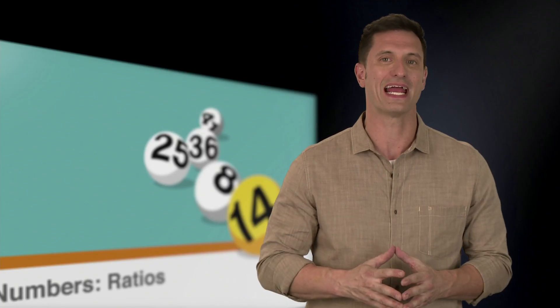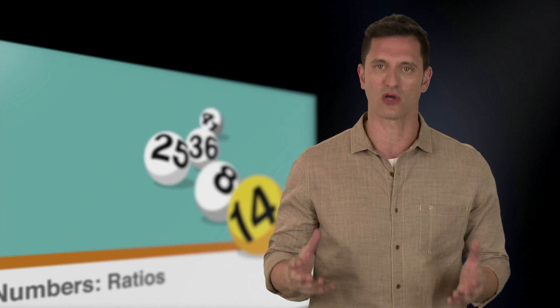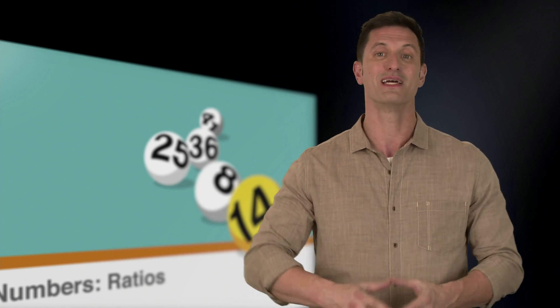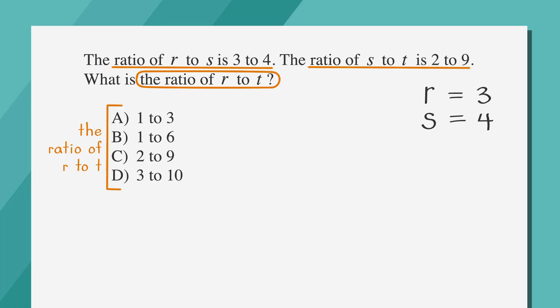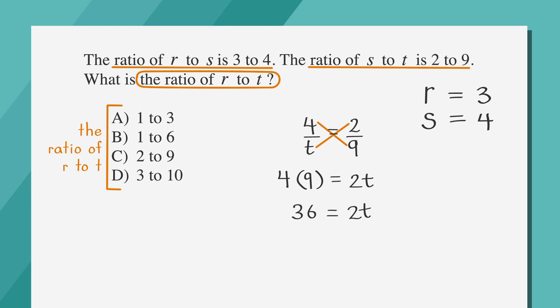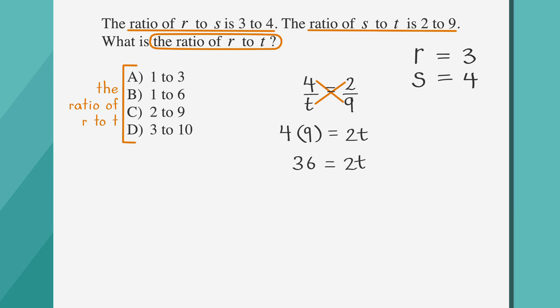Now that we have an equation with a single variable, we can solve for t. We're going to solve by cross-multiplying. Our equation says 4 over t equals 2 over 9. If we cross-multiply, we get 4 times 9 equals 2 times t. Doing the multiplication, we get 36 equals 2t. Dividing both sides by 2, we find that t equals 18. The question is asking for the ratio of r to t. Plugging in 3 for r and 18 for t, our ratio is 3 to 18.